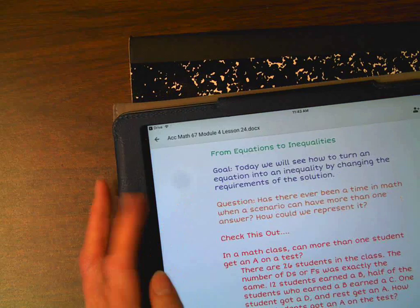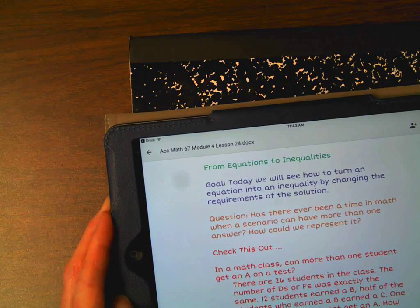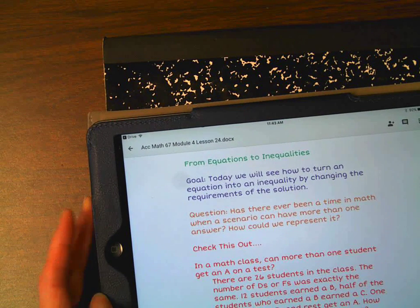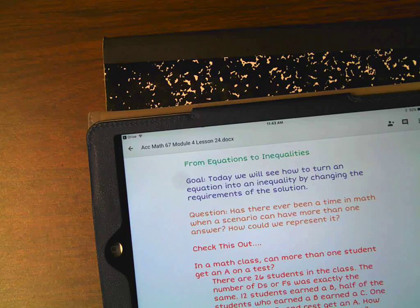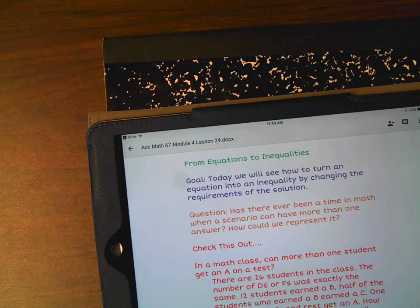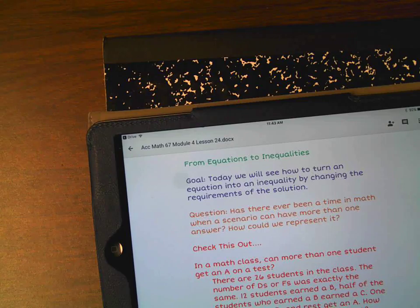Let's go back to our goal for today. Today we will see how to turn an equation into an inequality by changing the requirements of the solution. Our question, has there ever been a time in math when a scenario can have more than one answer? How could we represent it? And we represented it with an inequality. That's all I have for you today, and I will see you all tomorrow. Bye!